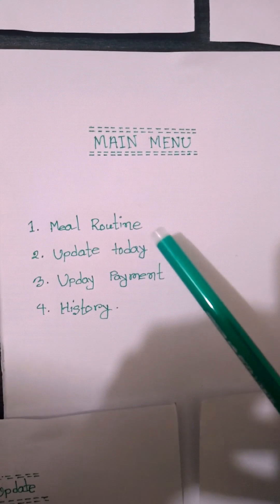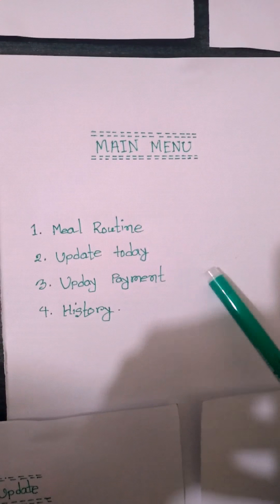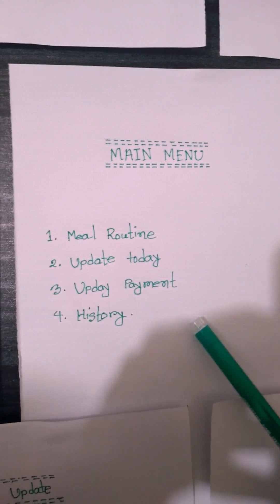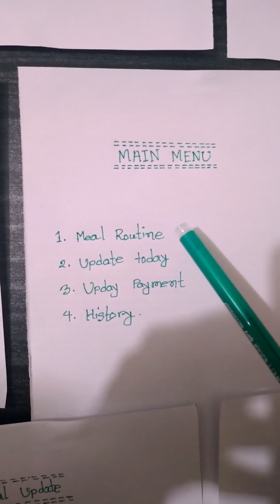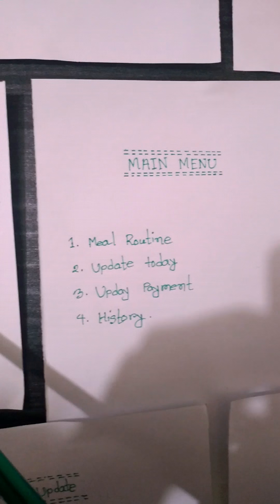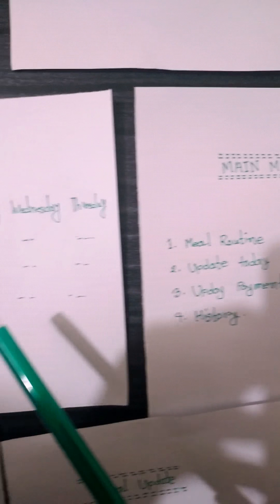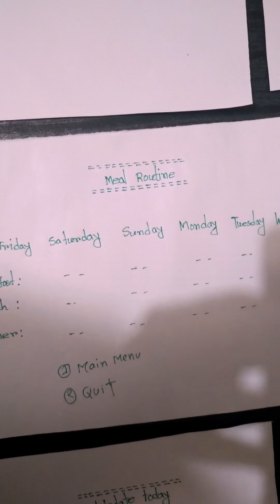On the main menu page, we see four options: meal routine, update today, update payment, and history. If we press on meal routine, then we go to the meal routine page.